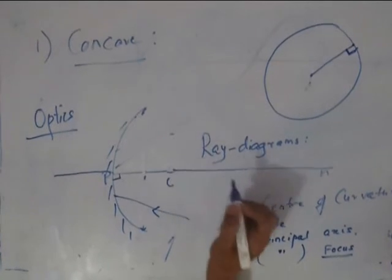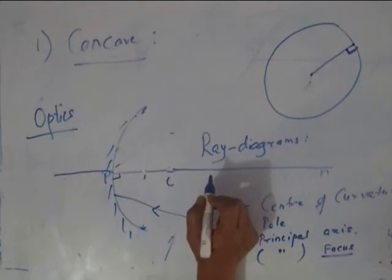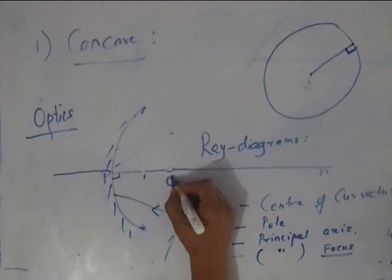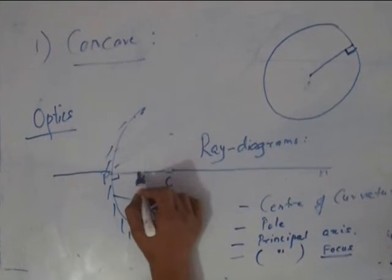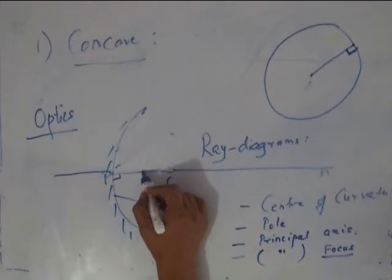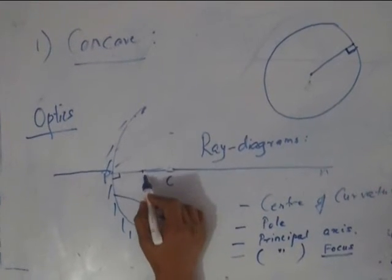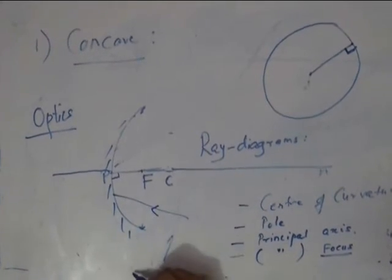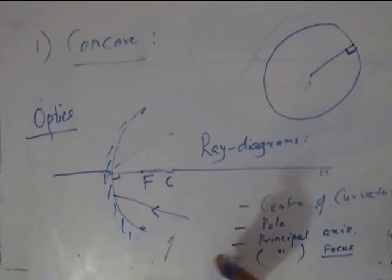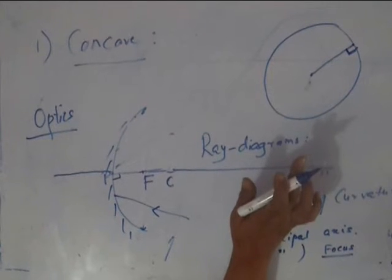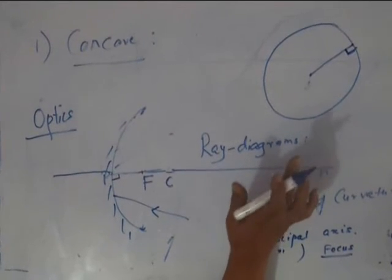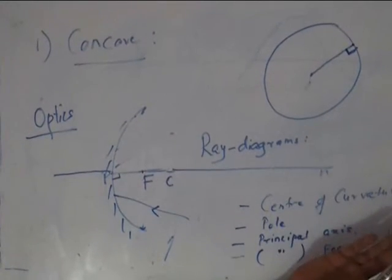From the center where you have kept the point of your compass, write C that is the center of curvature, write P, and exactly midway you mark the point and call it F. I am coming to the importance of this F. Now as I talked about the diagram, the activity of paper burning, let us see what is the corresponding diagram and what is the corresponding definition.